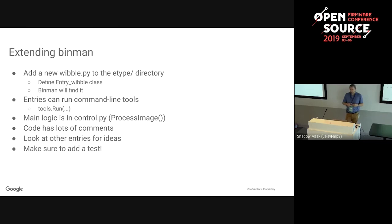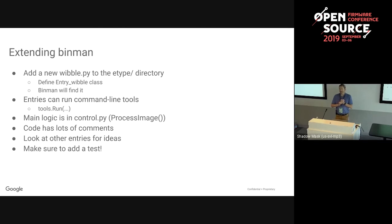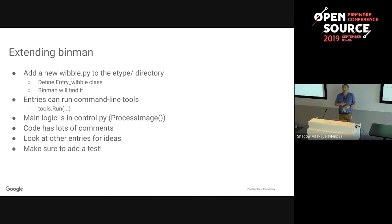To extend Binman and create a new entry type called 'wibble', you put a new file called wibble.py into the etype directory and put a class in it - Binman will find it and now you've got wibble. If you want to run command-line tools you can do that. Most of the logic is in control.py - around 20 lines of calls for the different stages. There are lots of comments, and you can look at other entries for ideas. You have to add a test - you can't add an entry without one.